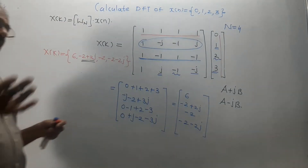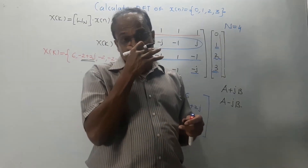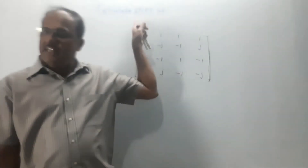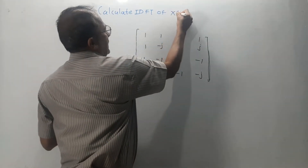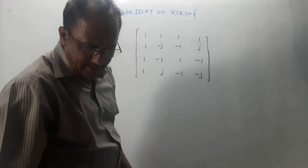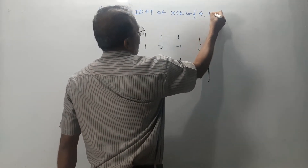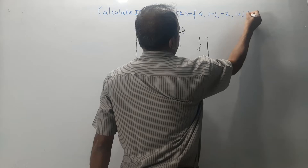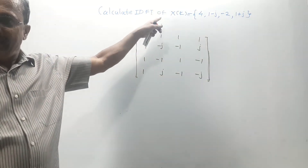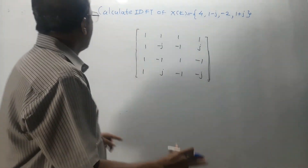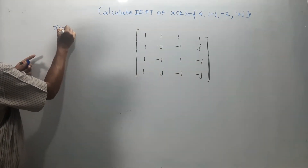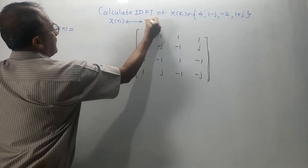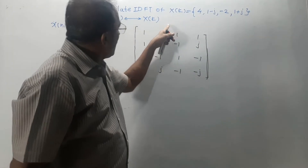Now let us solve a numerical on inverse DFT. The problem is: calculate IDFT — inverse DFT — of the given sequence X of K equals 4, 1 minus j, minus 2, and 1 plus j. That means the DFT is given and it is asked to calculate inverse DFT. Recall the formula: X of n, whose DFT is capital X of K, so IDFT of X of K is X of n.